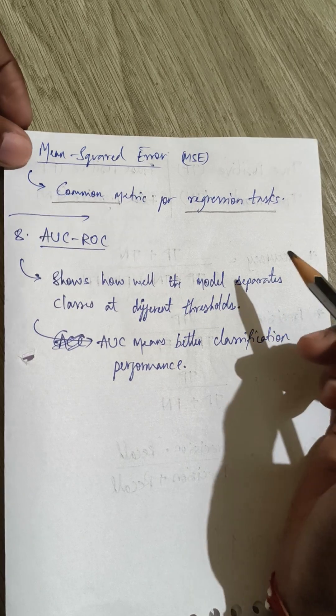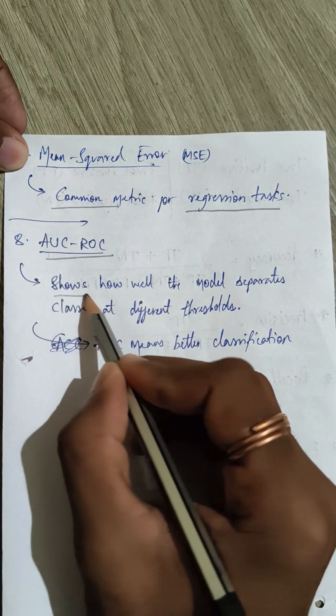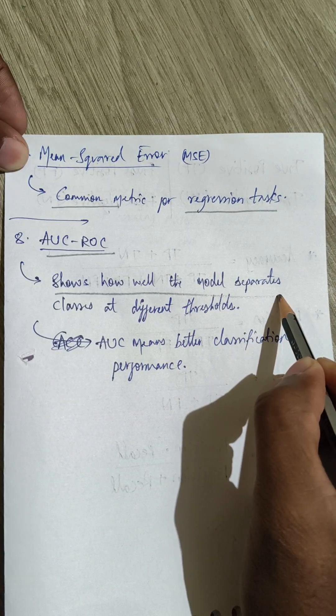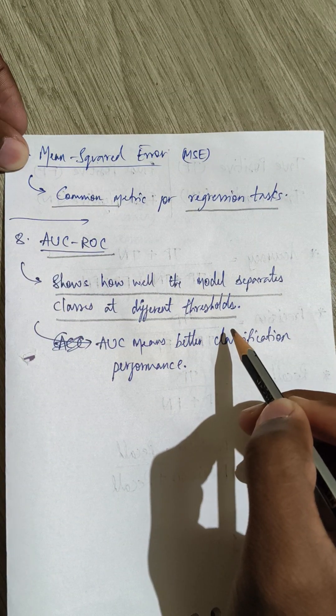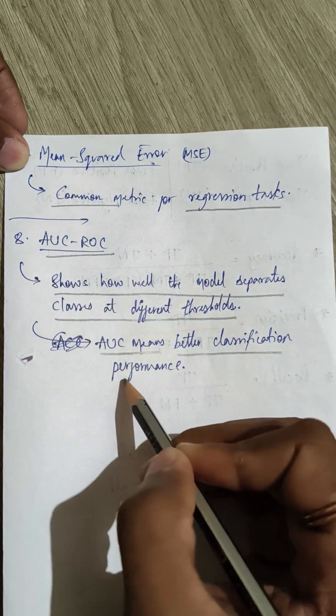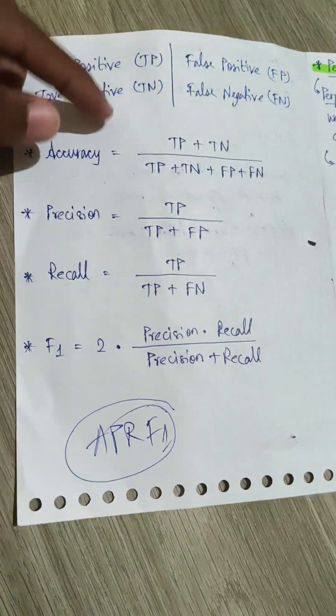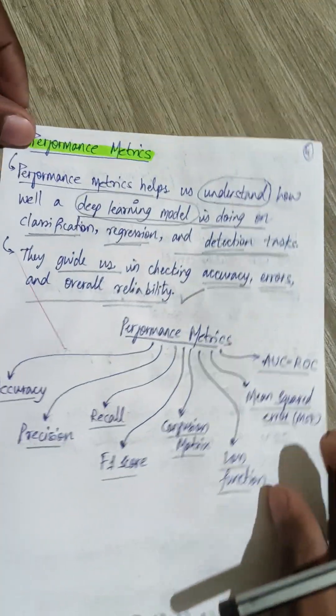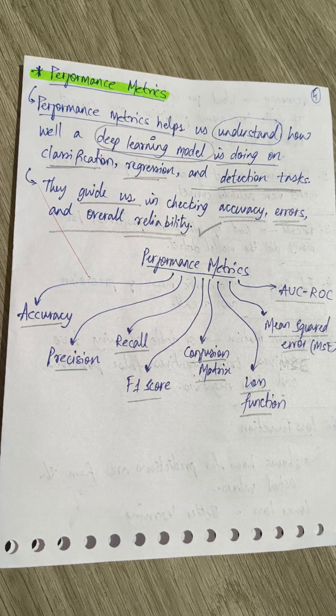Now coming to AUC and ROC. This shows us how well the model separates classes at different thresholds. Higher AUC means better classification performance. This is what the performance metrics is. I hope everyone understood this. Thanks for watching.